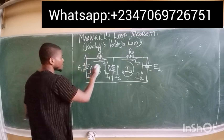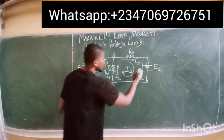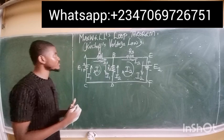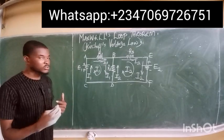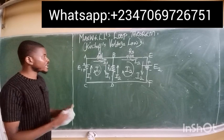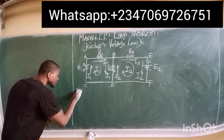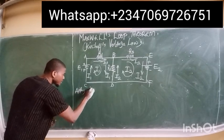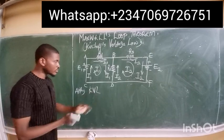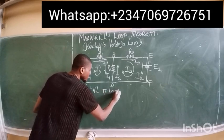Let's label the nodes here: a, b, c, d, e, and f. Now we simply apply Kirchhoff's voltage law — that is Maxwell's loop theorem — to each of the loops. We apply KVL to loop ABCD.